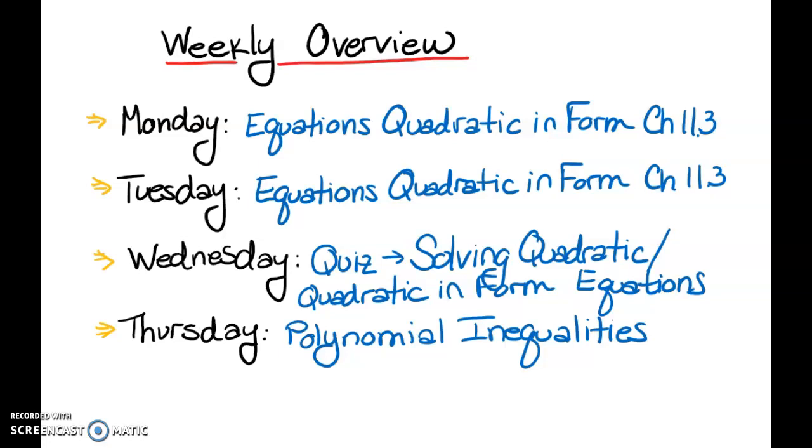You're going to go back and see equations that you've done in previous chapters that result in a quadratic equation that you have to solve instead of a linear equation. For instance, you might see rational equations that when you multiply by the LCD, you get a quadratic equation. You might also see equations that have radicals in them that when you square both sides, you get a quadratic equation. So you're going to see those on Monday and Tuesday.